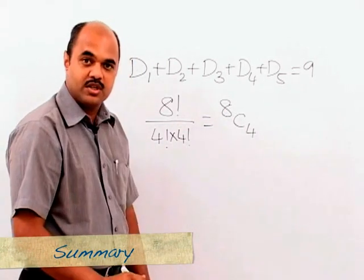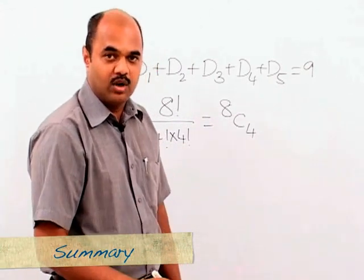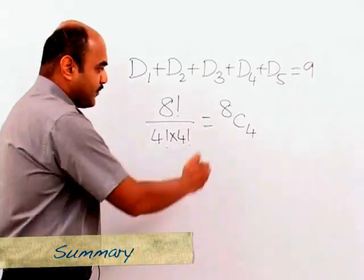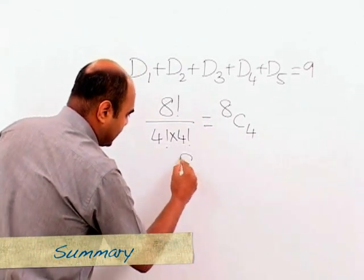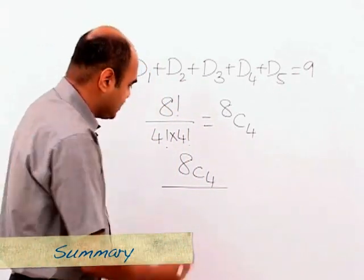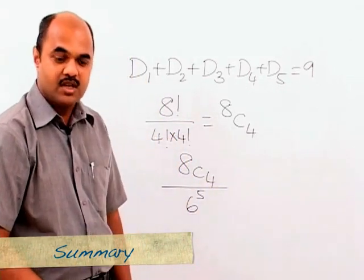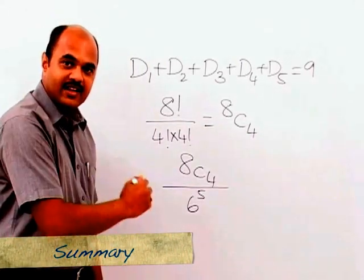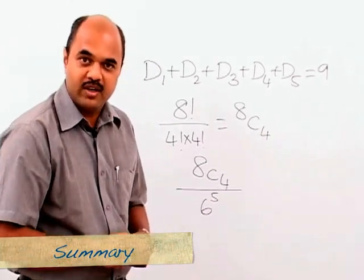If we convert this into a probability question — what is the chance of getting a total of nine on five dice — then 8C4 is the number of favorable ways. We divide by the total number of possibilities, which is 6 raised to the power 5, since there are six possibilities on each die and there are five dice. So the probability is 8C4 / 6^5.